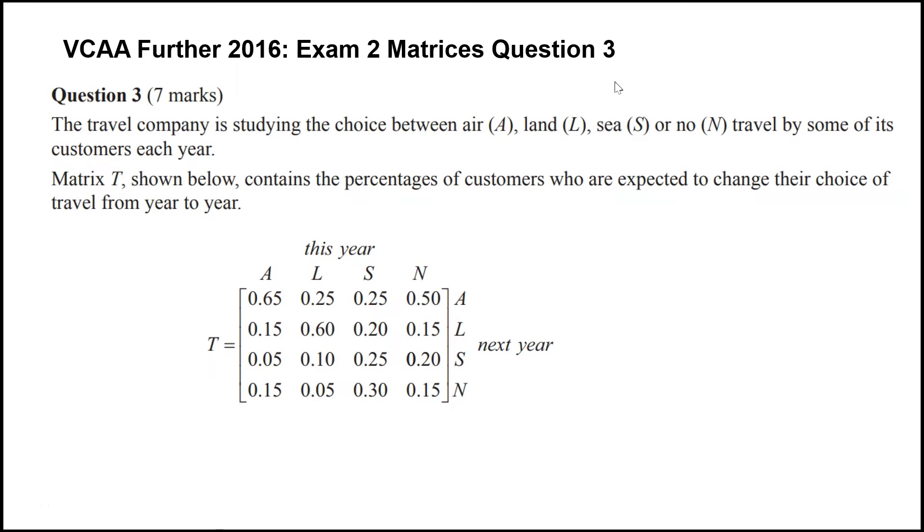Question 3 on exam 2 is the last matrices question. It's about a travel company, and the travelers have four choices: air, land, sea, or no travel at all. And we're given this matrix T, which is a transition matrix from one year to the next. We're also given a steady state matrix.